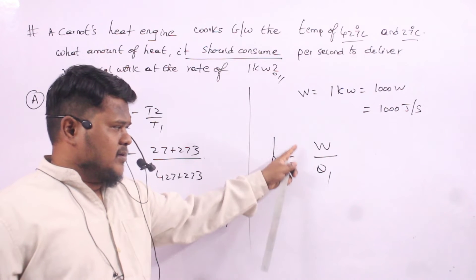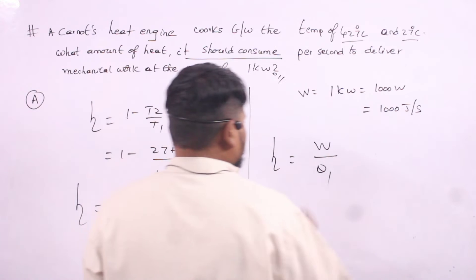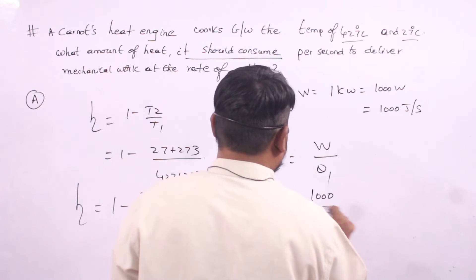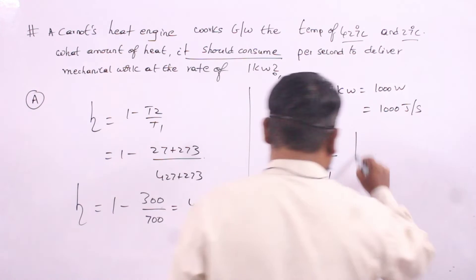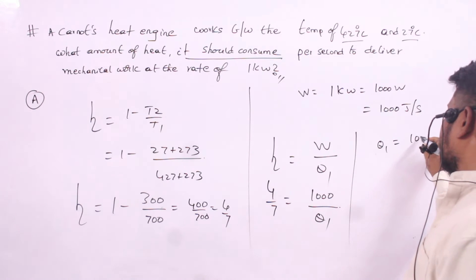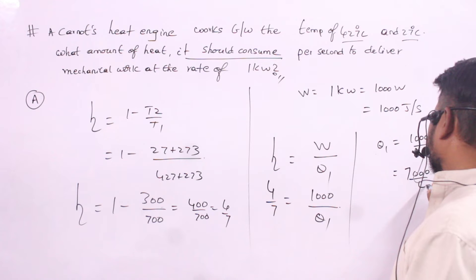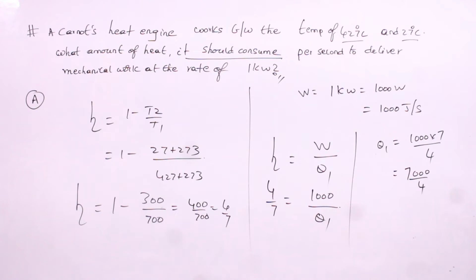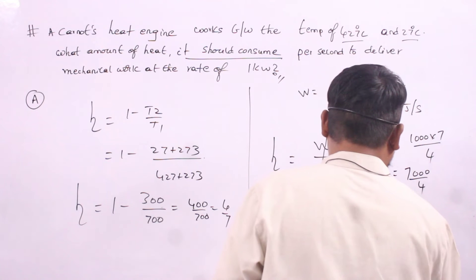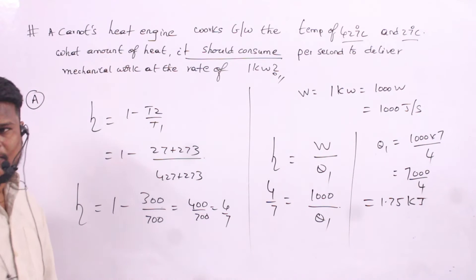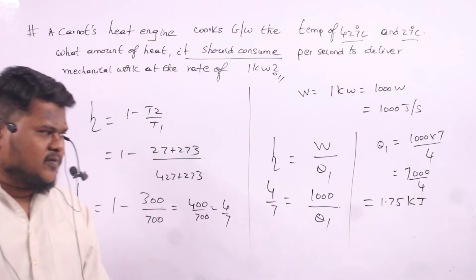Efficiency is 4 by 7, work done is 1000 joules per second, so 4/7 equals 1000 divided by Q1. Therefore Q1 equals 1000 multiplied by 7 by 4, which is 7000 divided by 4, giving 1.75 kilojuoles per second.